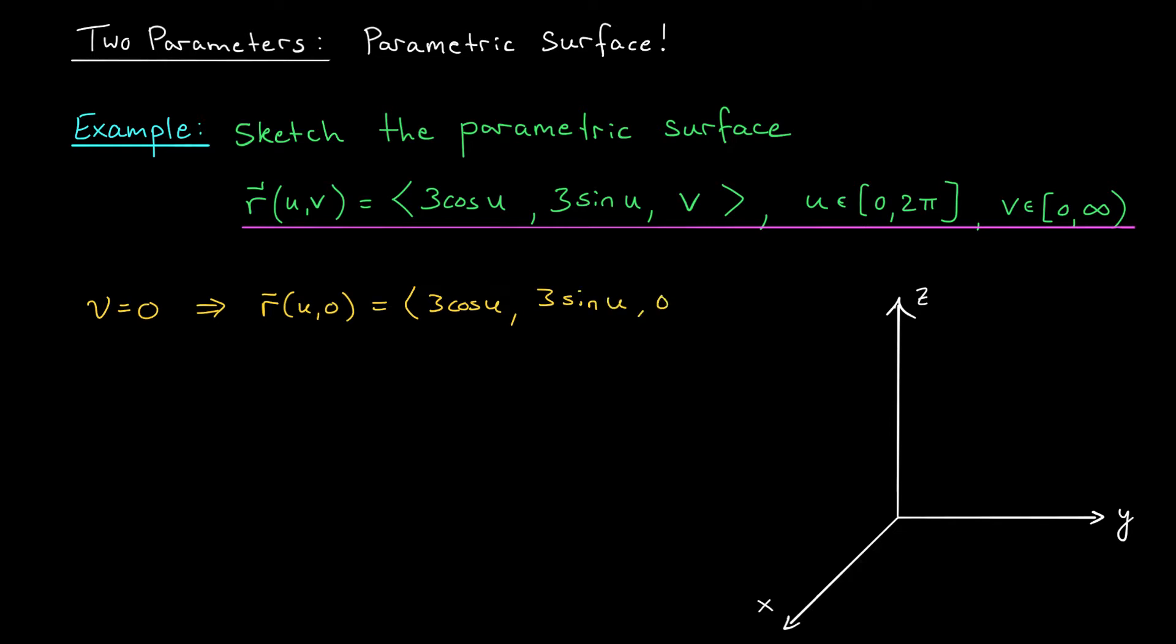All right, the Z component is 0, which means whatever graph this represents lives somewhere in the XY plane. But hold on a second. If X is 3 cos U and Y is 3 sine U, well, that's the equation of a circle. It's a circle of radius 3 centered at the origin and traversed counterclockwise. It looks something like this.